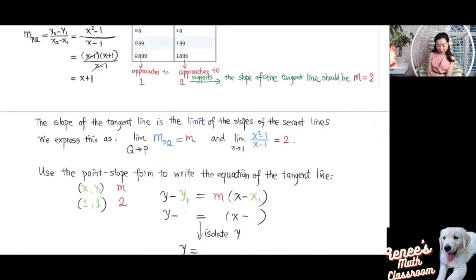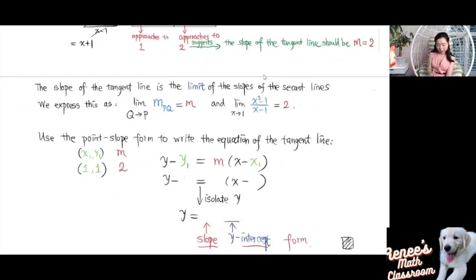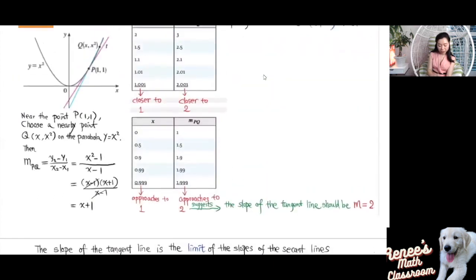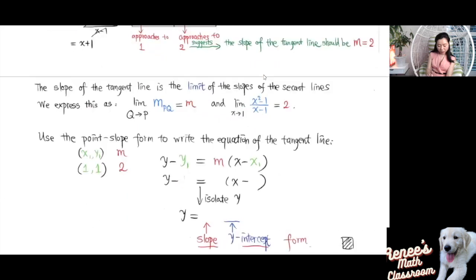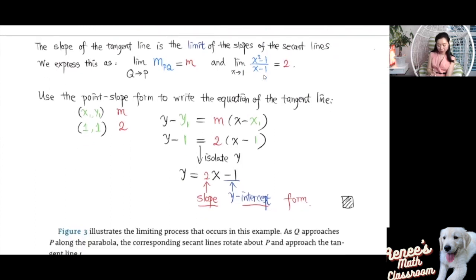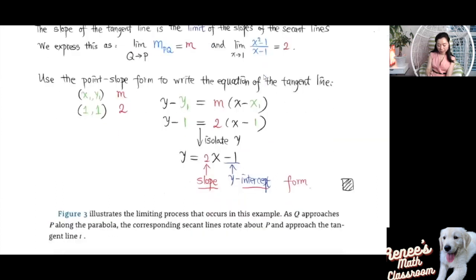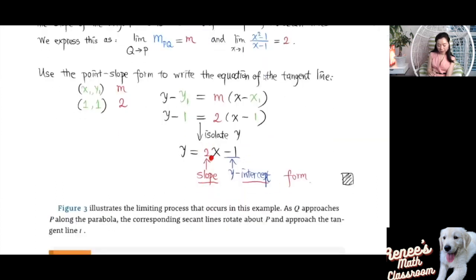Since the tangent line has slope equal to 2, we can use the point-slope form to write the equation. The point-slope form is y - y₁ = m(x - x₁). The point we have is (1, 1), so using the point-slope form we have y - 1 = 2(x - 1). When you isolate y, we get y = 2x - 1. That's the equation for the tangent line, which is in slope-intercept form — where 2 is the slope and -1 is the y-intercept.